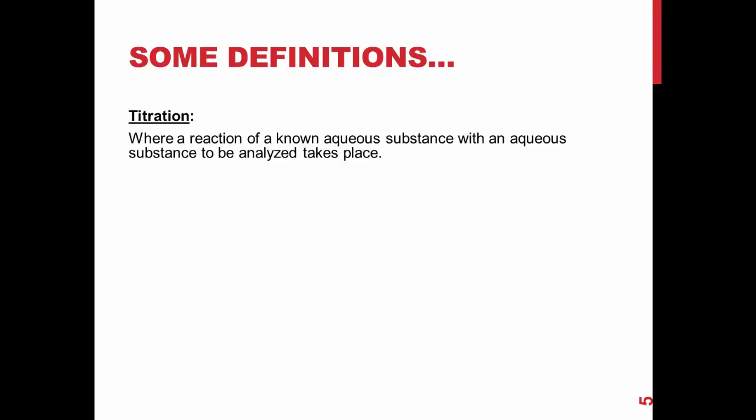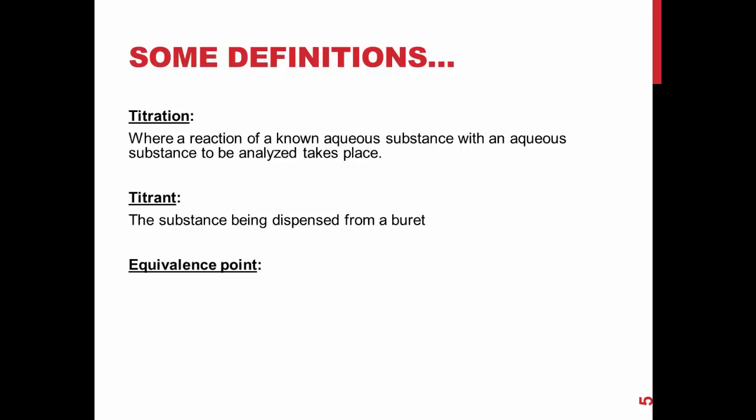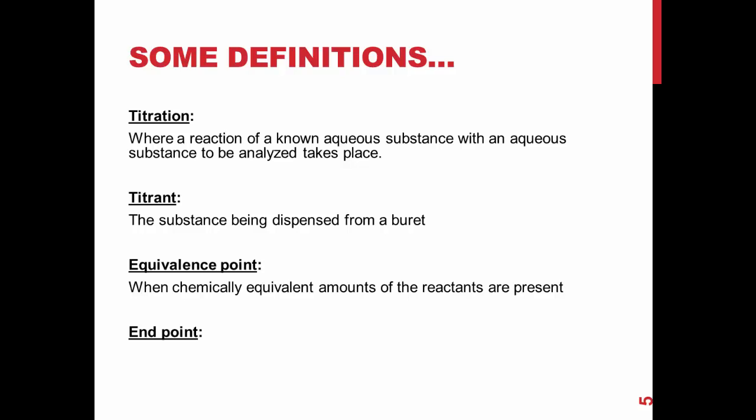Here are some definitions in case you are not familiar with titrations. A titration is where an aqueous substance is analyzed by reacting it with a known aqueous substance. A titrant is the substance being dispensed from the burette. The equivalence point is when chemically equivalent amounts of reactants are present, and the end point is when the indicator changes color — this is the main thing you will be looking for during a titration.